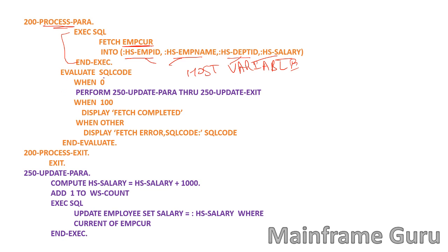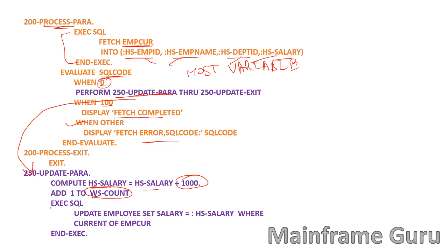In the processing paragraph, I am fetching from the employee cursor into host variables: employee ID, employee name, department ID, and salary. After fetching, I check the SQLCODE: zero means one record was fetched successfully, 100 means all records have been fetched and none remain, and any other value means there was a problem. When a record is fetched, we go to the update paragraph where we update the salary by 1000 and execute the query using CURRENT OF employee cursor to update the current record.